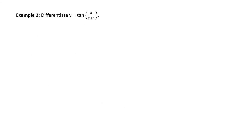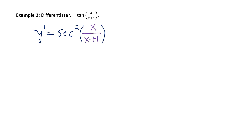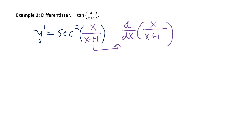Example: differentiate y equals the tangent of the quotient x divided by x plus 1. We learned previously that the derivative of tangent is secant squared. Our inside function is x divided by x plus 1. So what we need to do is multiply using the chain rule with the derivative of the inside function — that is, d/dx of x over x plus 1. Here we're going to need to use the quotient rule. It's okay if you need to write it every time you use it — that'll help you learn it.